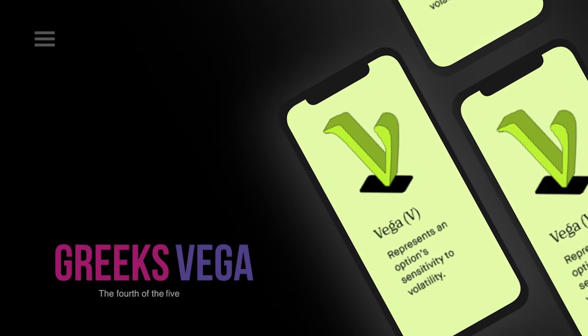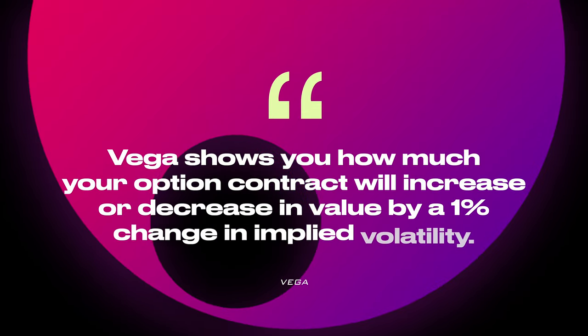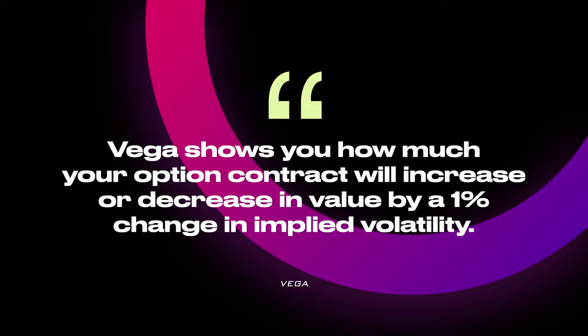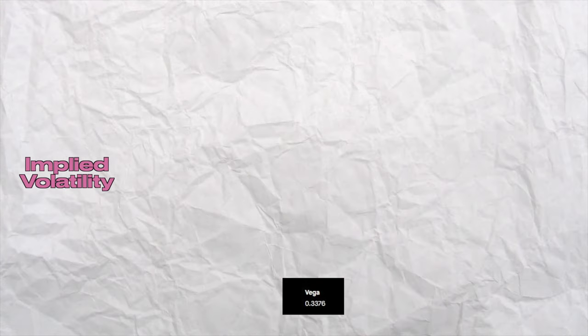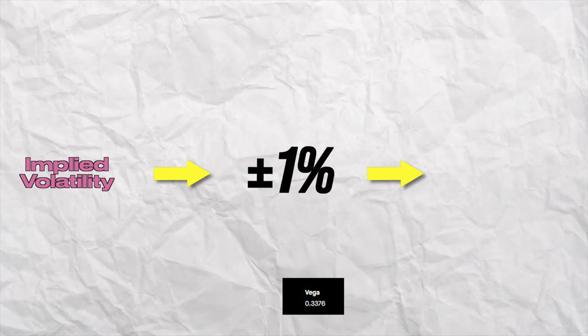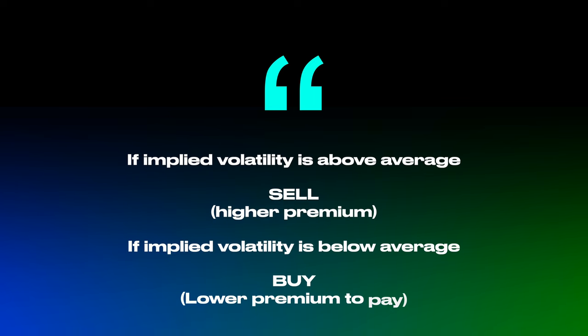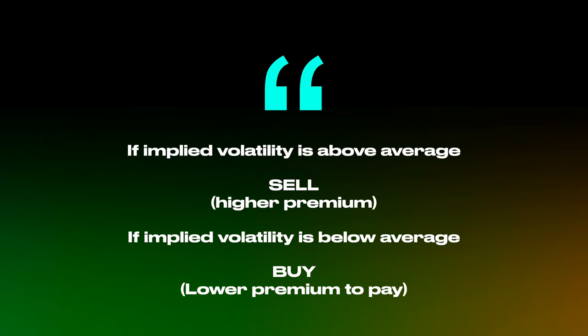Now let's move on to Vega. Vega is correlated to implied volatility and shows you how much your option contract will increase or decrease in value by a 1% change in implied volatility. My Apple option has a Vega of 0.3376, which means every time implied volatility increases or decreases by 1%, my contract will gain or lose $33.76. Implied volatility is not a Greek, but as a side note: if implied volatility is above average, it's good to sell options to secure a higher premium; if it's below average, it's a good time to buy options because the premium you pay is lower. I'll create a separate video just about implied volatility.